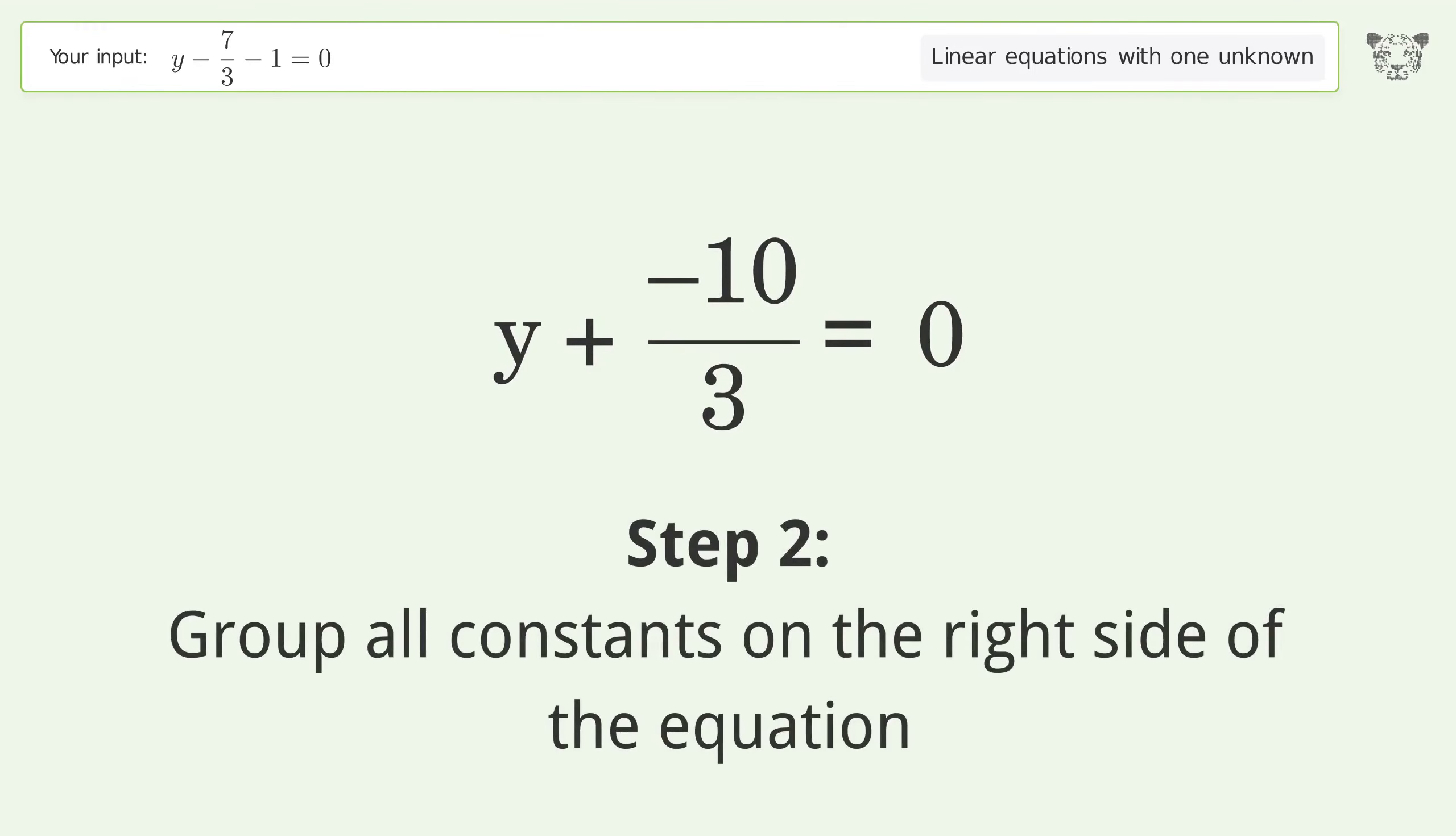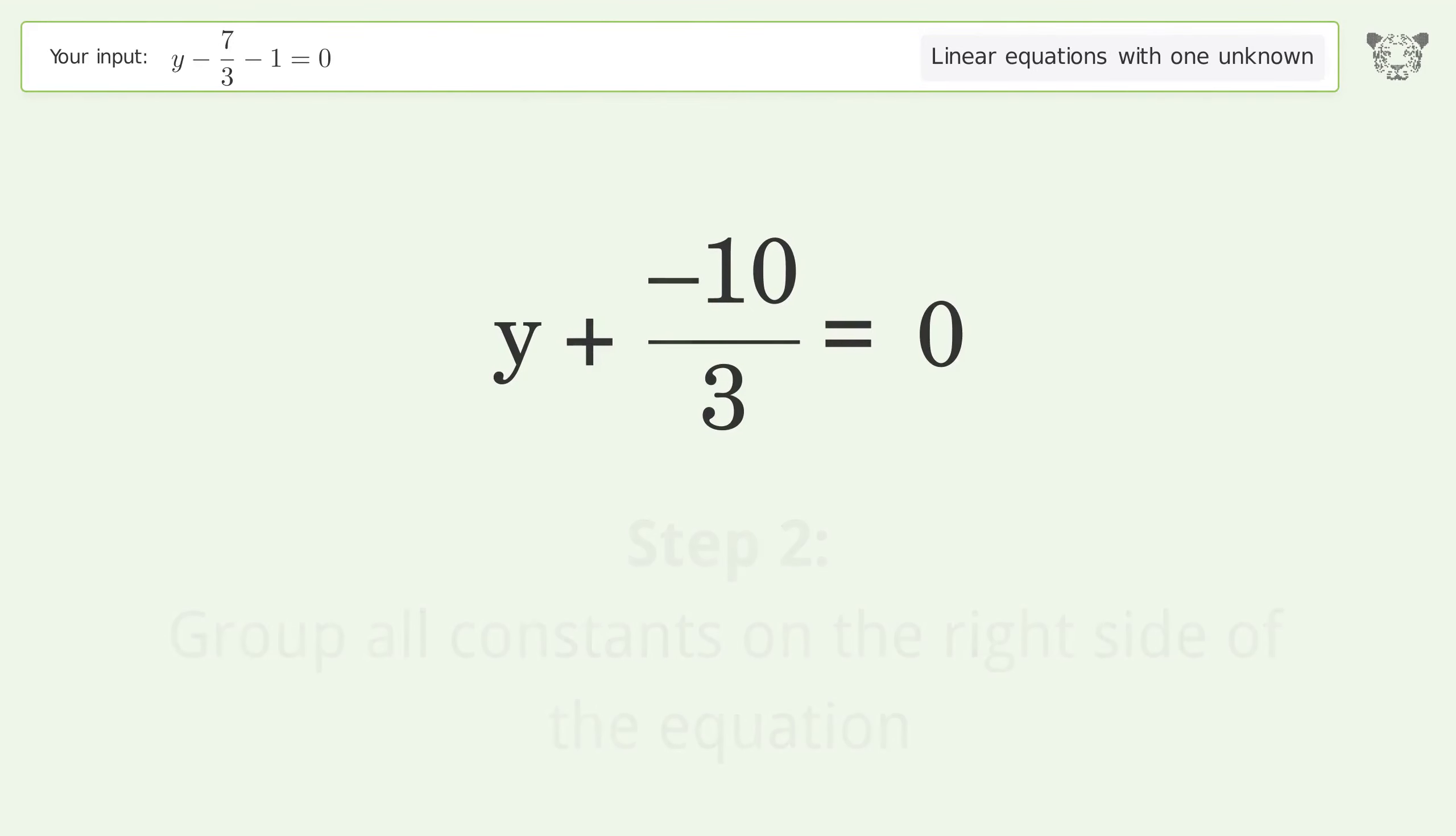Group all constants on the right side of the equation. Add 10 over 3 to both sides.